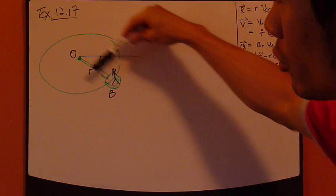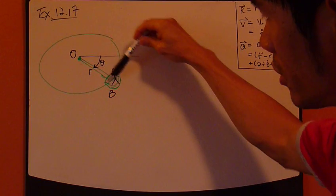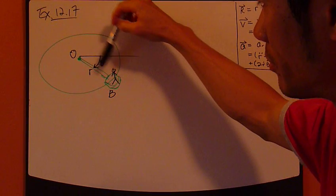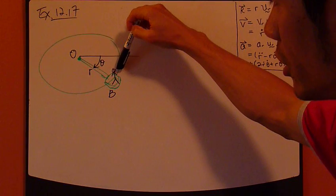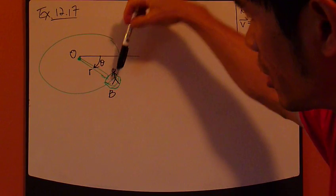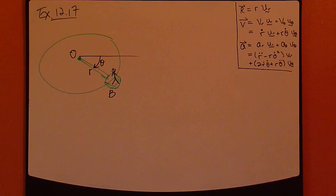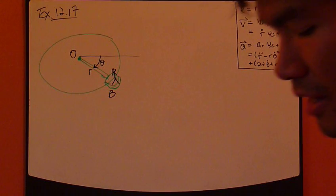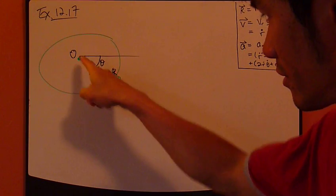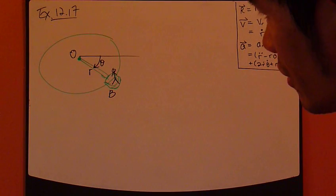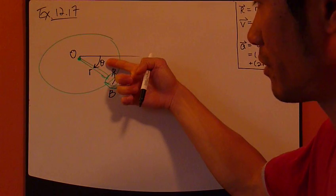It's set up this way. This is a ride at an amusement park. This is a chair with an arm fixed at a certain point O, and then this is a rider sitting in this chair and then spinning about point O. So in this particular example, the r, the radius, is fixed. So the only thing that's changing is angle theta.